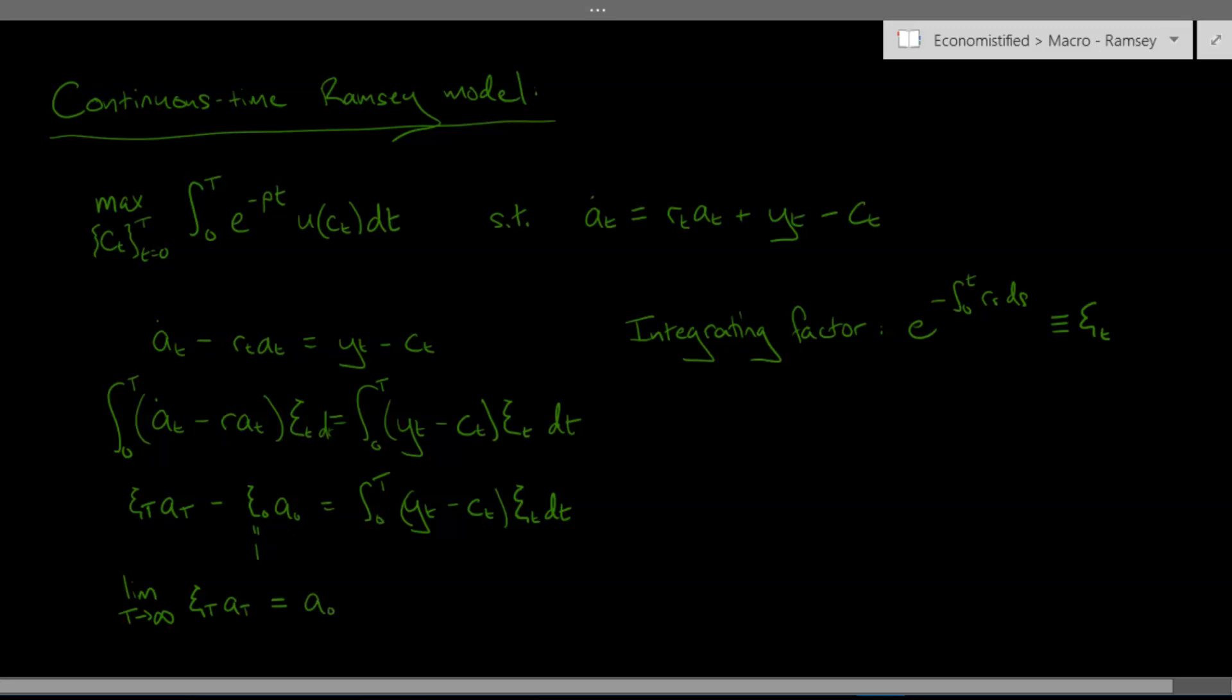So on the left hand side we get the limit of ξ_t times a_t and that's going to be equal to a zero just moving that on the other side plus now this integral from zero to infinity of ξ_t times y_t minus c_t. Now it's very common to just say that this thing here tends to zero as t goes to infinity and it does but this is actually an optimality condition